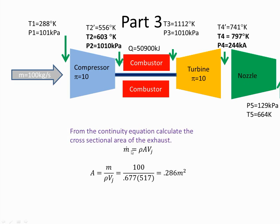From the continuity equation the mass flow of air is rho A Vj, where A is the area. Vj is the velocity of the jet. I know the mass was 100 kg per second. That was given to us. I've determined the density and I've calculated the velocity of the jet. Therefore I can work out the area of the nozzle. So I plug those numbers in I get 0.286 meters squared.